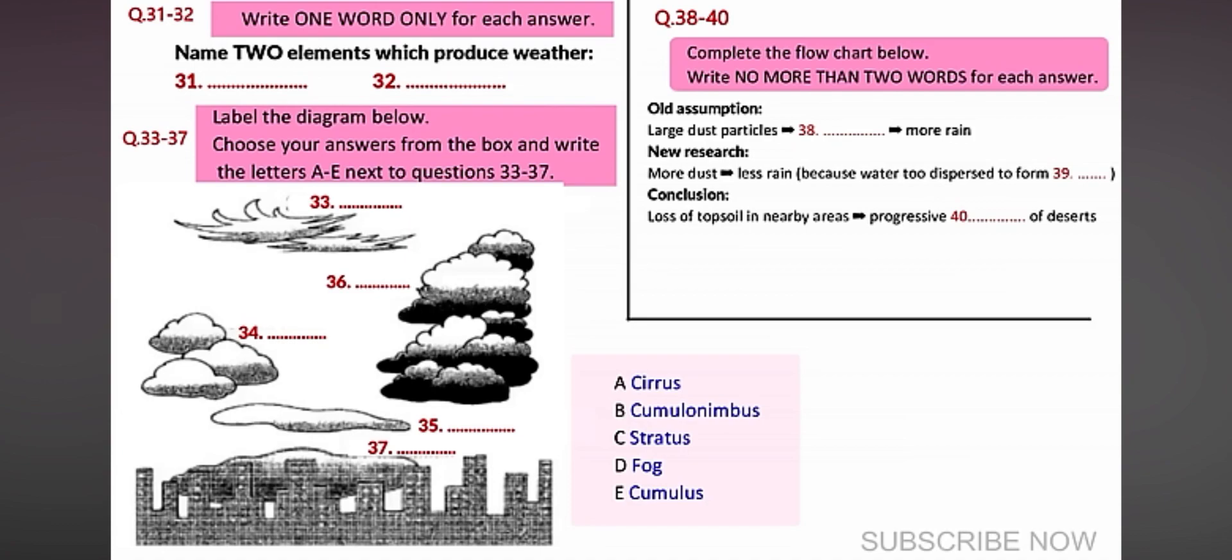As this course progresses, you'll learn a lot more about cloud types. But before I finish today, I want to go back to something I mentioned before, dust. It is generally accepted that when water vapor ascends in the process of cloud formation, it condenses onto dust particles. So, it was assumed large dust particles would produce larger droplets and enhance the formation of rain. However, recent research has shown the opposite to be true.